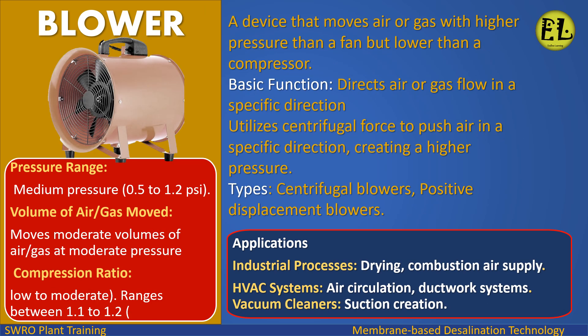Blower: a device that moves air or gas with higher pressure than a fan but lower than a compressor. Basic function: directs air or gas flow in a specific direction, utilizing centrifugal force to push air in a specific direction, creating higher pressure. Types: centrifugal blowers, positive displacement blowers. Applications: industrial processes, drying, combustion air supply. Pressure range: medium pressure. Compression ratio: low to moderate, ranging between 1.1 to 1.2.